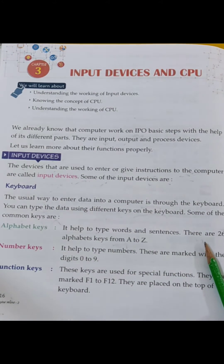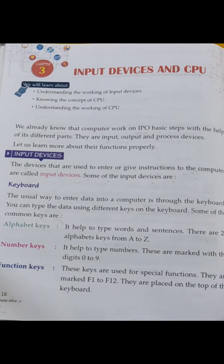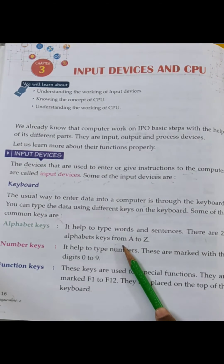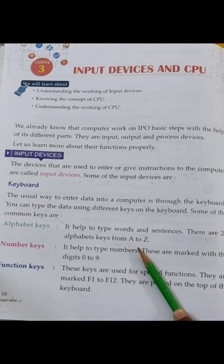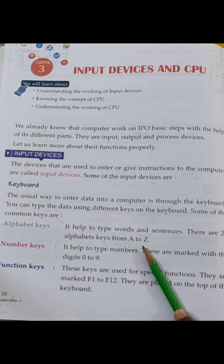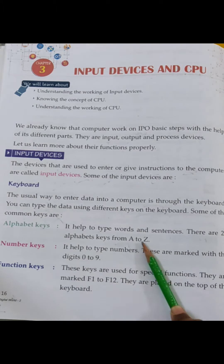There are 26 alphabet keys from A to Z. कितने alphabet keys हैं? 26. और कहां से कहां तक? A to Z. जैसे आपने ABCD पढ़ी है — A to Z तक होती है — वैसे ही keyboard पे भी A to Z alphabets mention होते हैं.